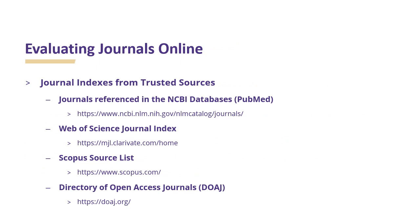When you're evaluating journals online, there are some journal indexes from trusted sources that you can use. For example, you can use journals referenced in the NCBI database in PubMed, the Web of Science Journal Index, the Scopus Source List, and the Directory of Open Access Journals.